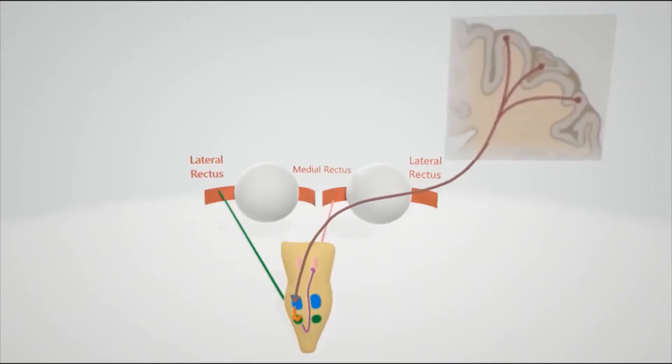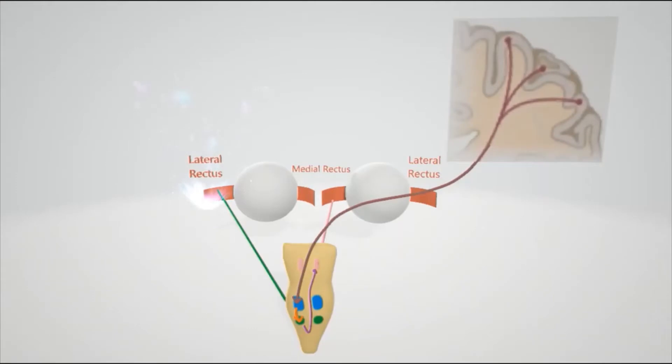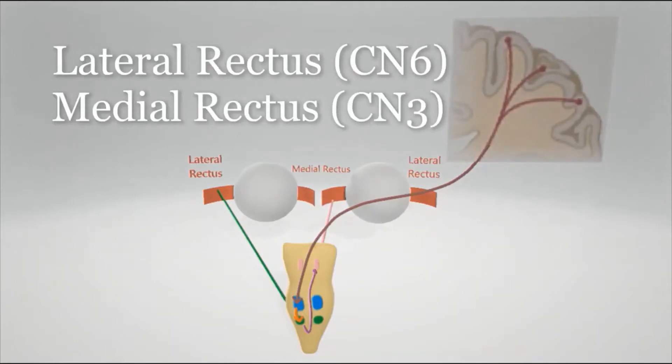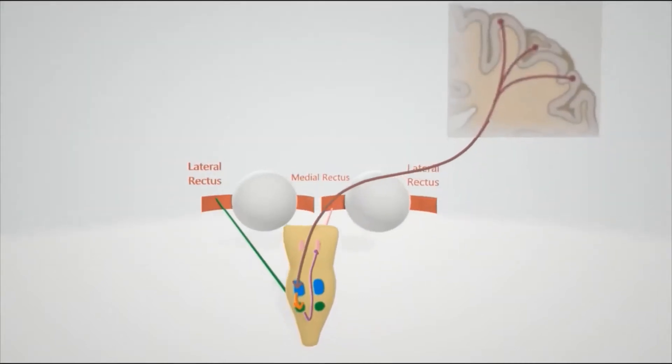Let's say a person looks to the left, so the lateral rectus on the left is going to need to contract, and the medial rectus on the right eye is going to need to contract. The problem is the lateral rectus is innervated by cranial nerve 6, whereas the medial rectus is innervated by cranial nerve 3. So how does that work? That's where the medial longitudinal fasciculus comes in.